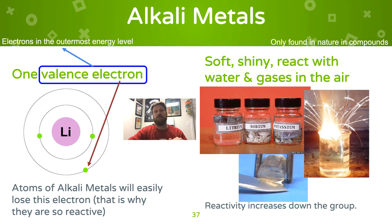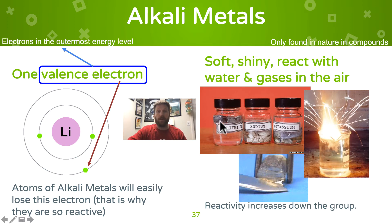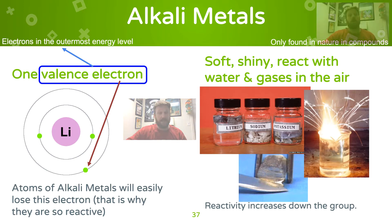You cannot find an alkali metal in its elemental form out in nature — it's always reacted with something else. If you can isolate it, these metals are soft, you can cut them with a knife, they're shiny, and they react with water and gas. A lot of times when isolated, you have to store them in oil. The reactivity of these metals increases as you go down the table — cesium is way more reactive than lithium.